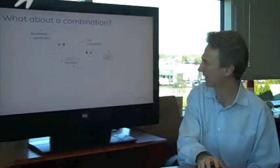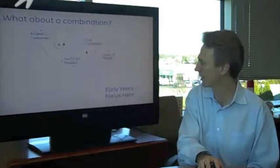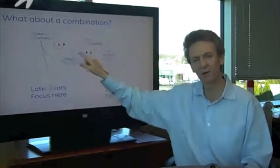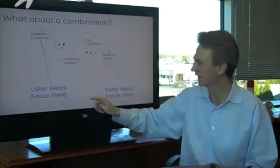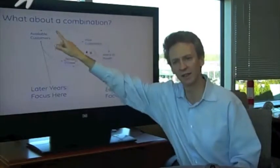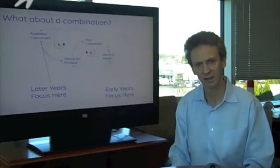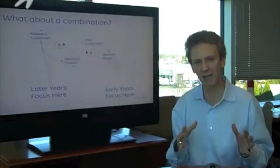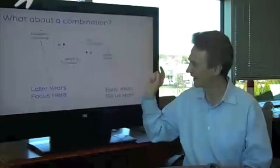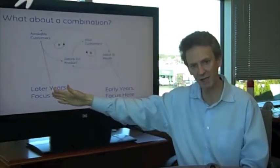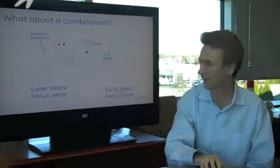So there's one other idea we can think of, which is what about a combination? I think it might be logical to in the early years focus here. We saw how that really helped the early years. And then the later years focus here, expanding your markets. That really helped the later years if you recall. So what I did is I modeled a combination where the first four years I invested here and then years five through ten in the model I invested here to see what that would look like. So let's take a look at that.